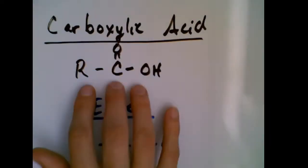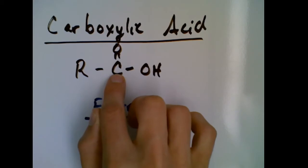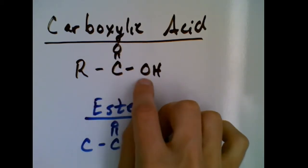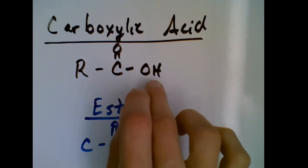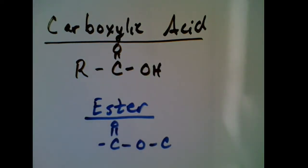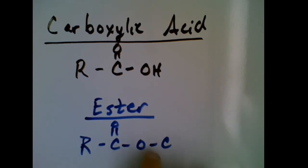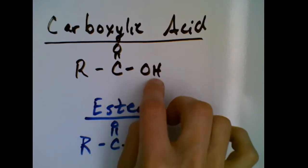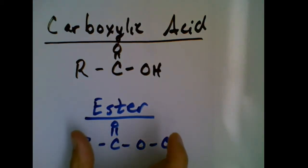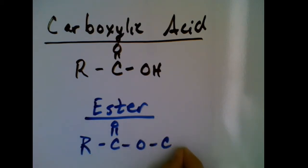In a carboxylic acid we see that carbon double bonded to an oxygen, single bonded to an oxygen, and that oxygen is connected to a hydrogen. Now in an ester — I'm just going to put an R group here so we understand that could be anything — what we have is still that carboxyl group, C double bonded to O, single bonded to O. But what's different is what's connected to that oxygen: it's another carbon. Rather than ending at an H, it's actually in the middle of the molecule because there's a continuation of carbons after this. That is what makes an ester.